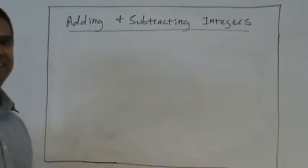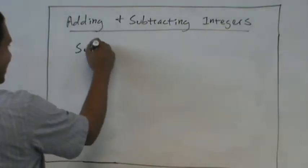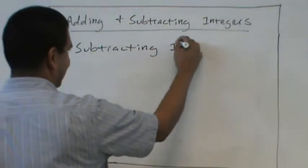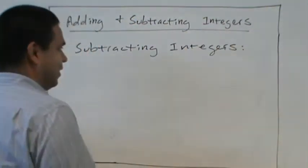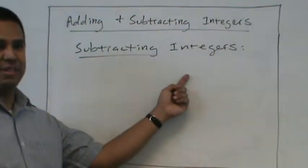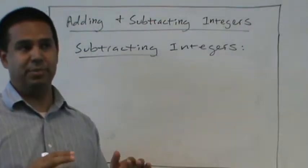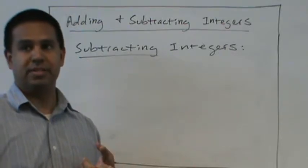Alright, welcome back. Another day, different shirt. Now we're going to look at subtracting integers. Very good. So we already reviewed what integers are. They're the whole numbers, positives and negatives, including zero. No decimals, no fractions.